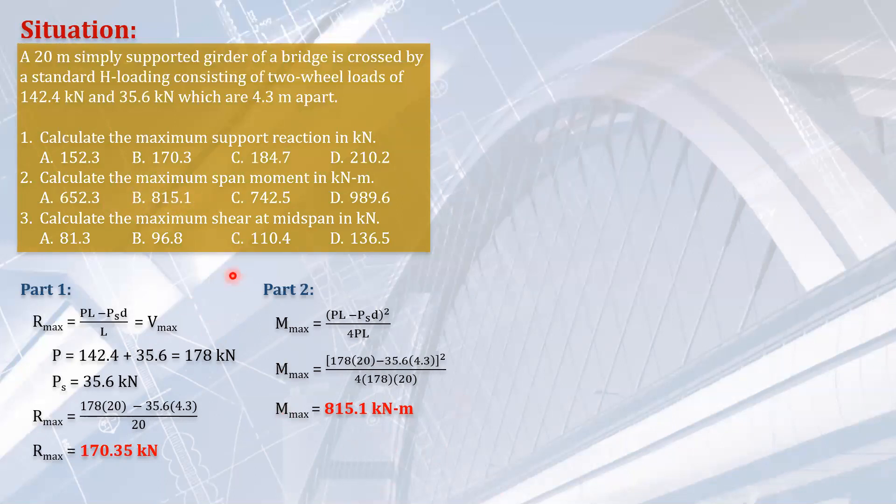The third part. Calculate the maximum shear at the mid span. Now we do not have a formula for that. If we will have, then it will be very specific. So this one is not at the mid span, the maximum moment. This one is also the maximum shear is not at the mid span. It is on the support. Now to solve the letter C.